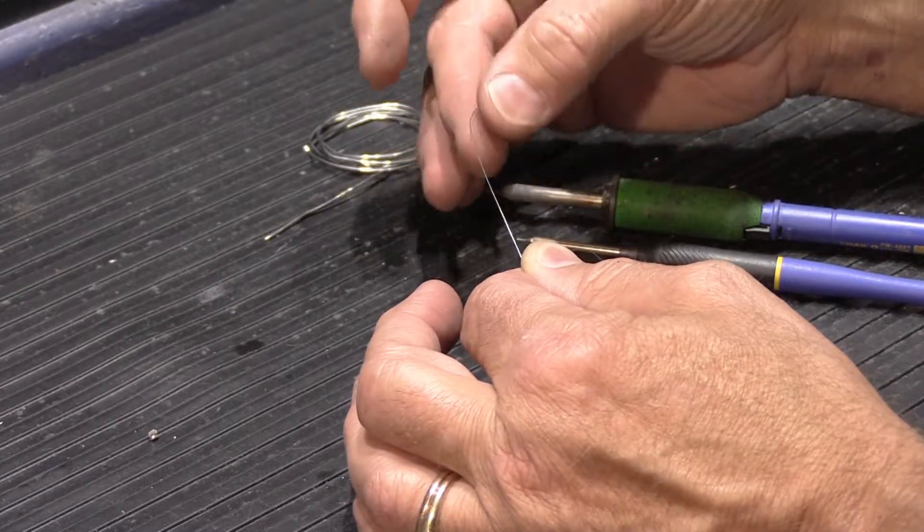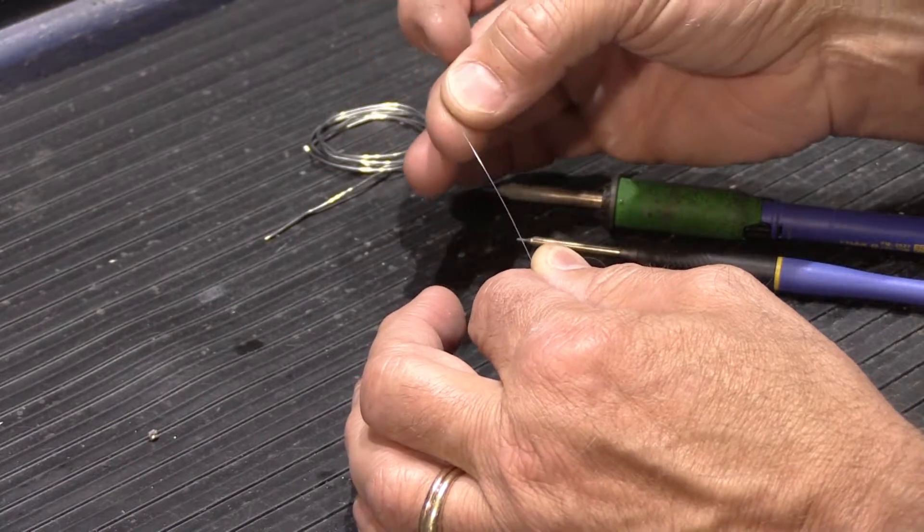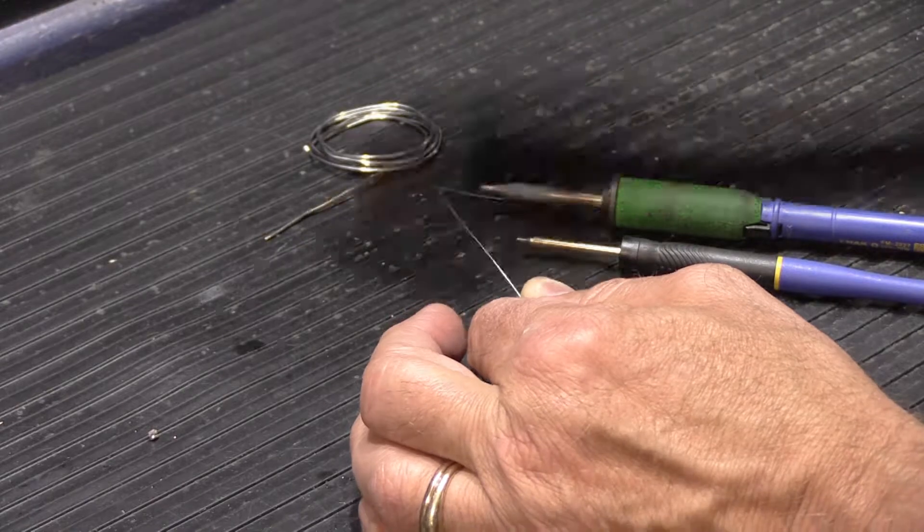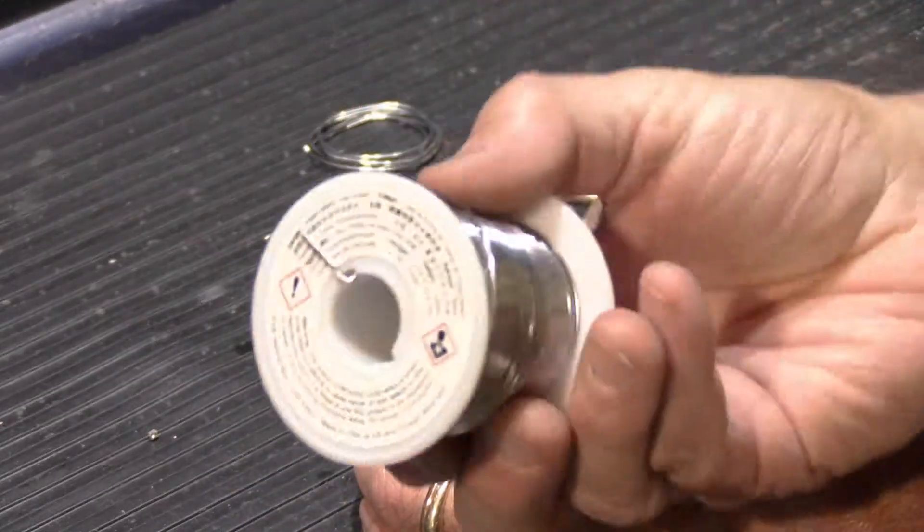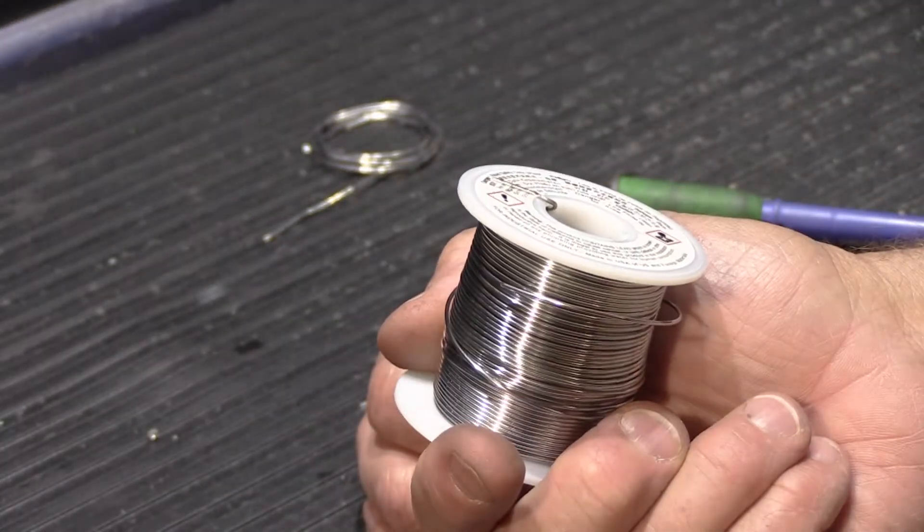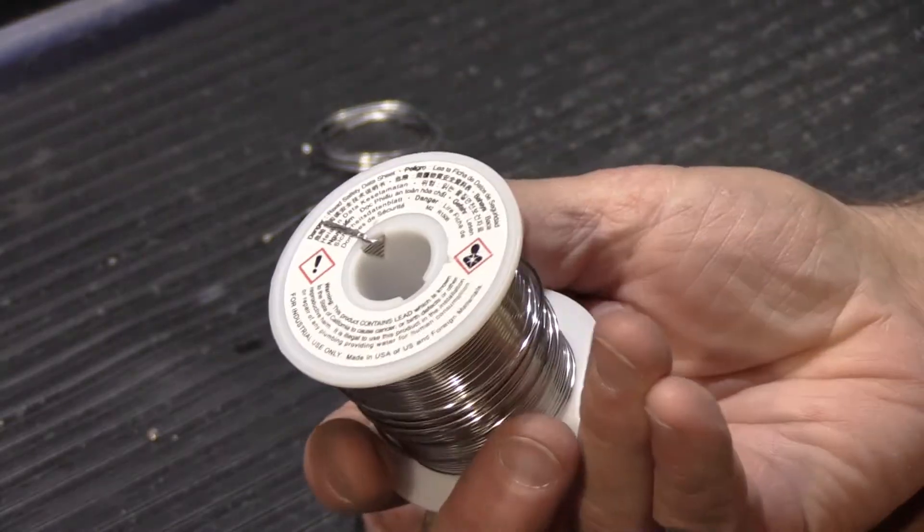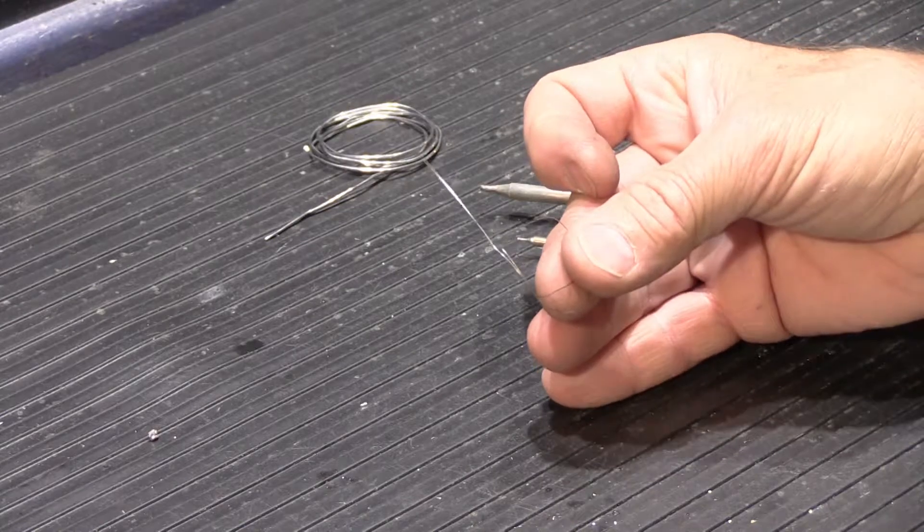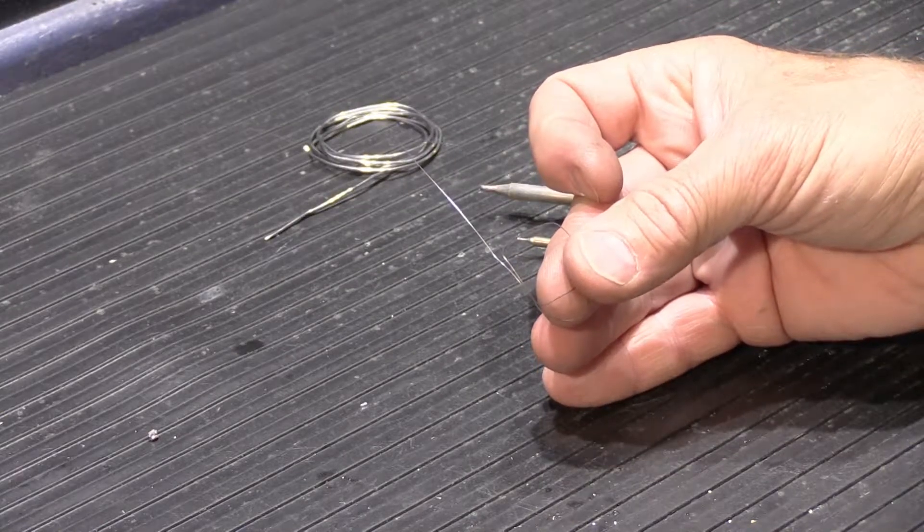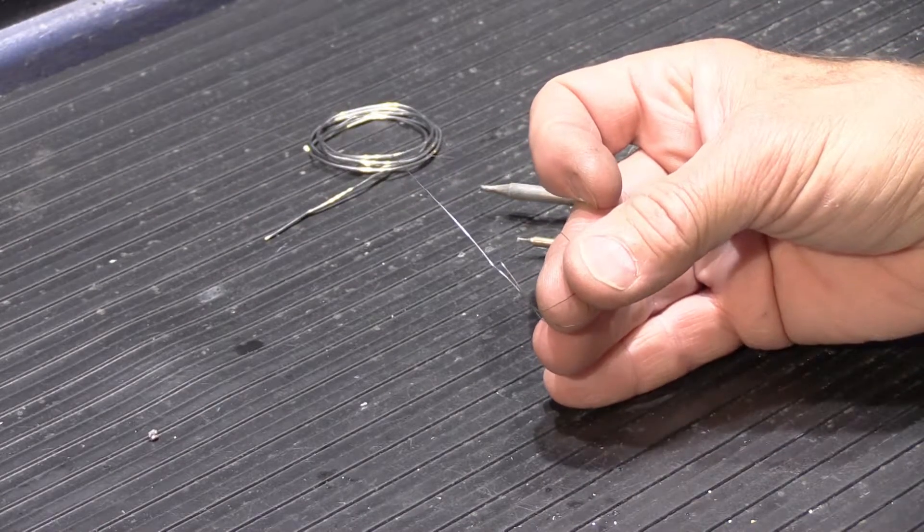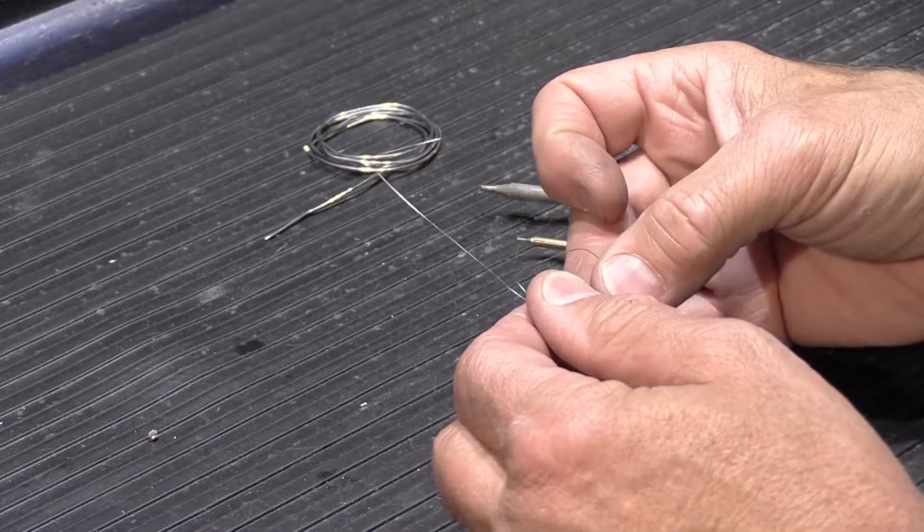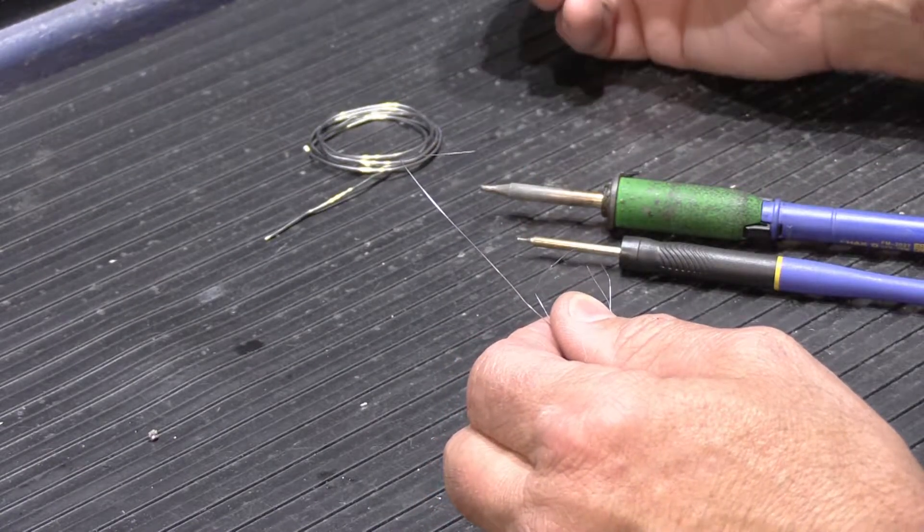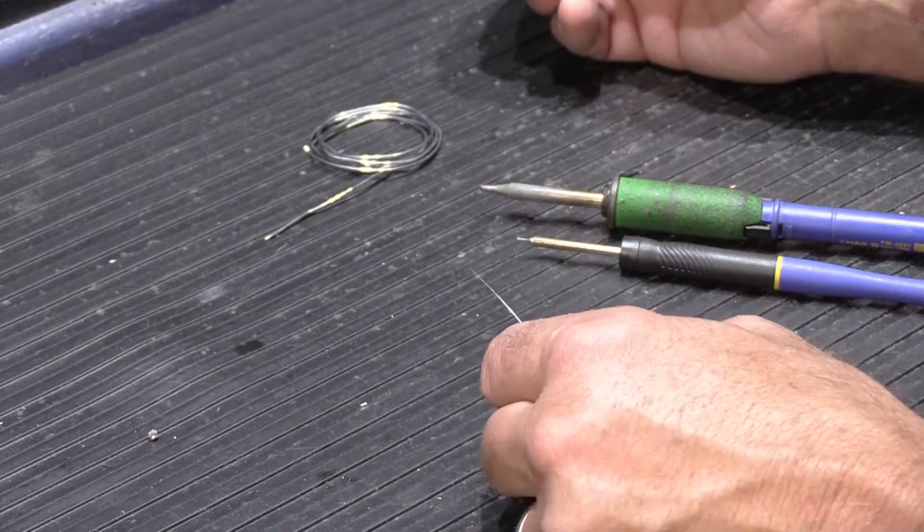The other thing about really small solder like this is it's really expensive. It's way more expensive than this. This is a one pound roll of the one millimeter stuff and this costs about $45 or so. If you bought a one pound roll of this it's like $300.